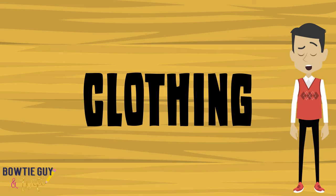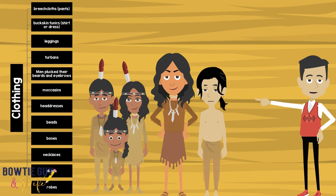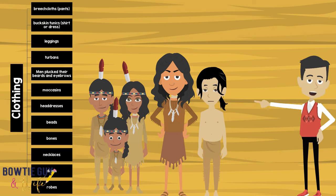How did they use their natural resources for clothing? American Indians of the Plains used resources such as buffalo, bones, and deer to make their clothing. They wore breech cloths, buckskin tunics, leggings, turbans, moccasins (which are like shoes), headdresses, beads, necklaces, dresses, and robes.